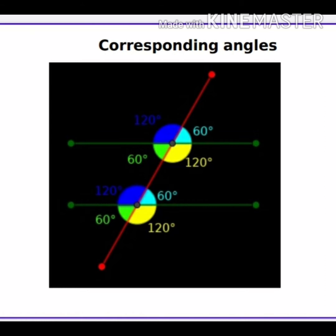Also, the yellow colored angles, which have a measurement of 120 degrees, are equal. They are below the parallel lines and on the right of the slanted line. We have studied that these pairs of angles are called corresponding angles.